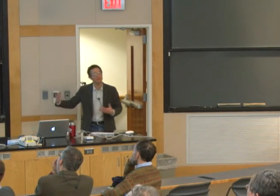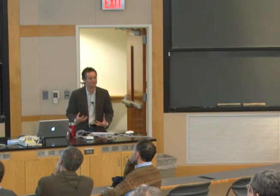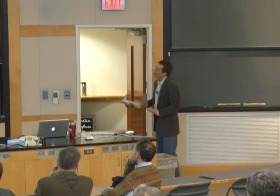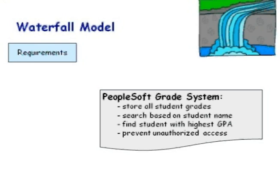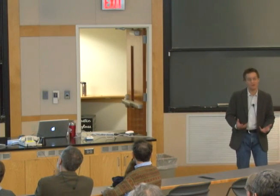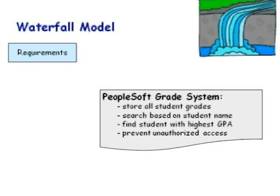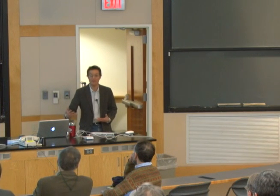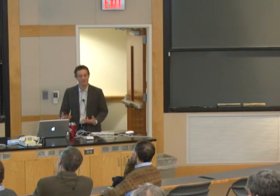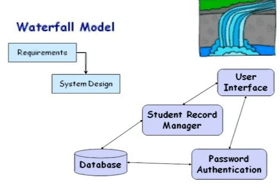Let me walk you through one basic software process: the waterfall model. Suppose Williams hires me to put the grading system into PeopleSoft. First, we sit down and talk about requirements — what's it supposed to do? Store all student grades, search by student name, find the student with the highest GPA, prevent unauthorized access, and so on. Once we've written that down, we start designing it: identify the big pieces — a database to store information, an authentication mechanism to check passwords, a user interface to enter data.